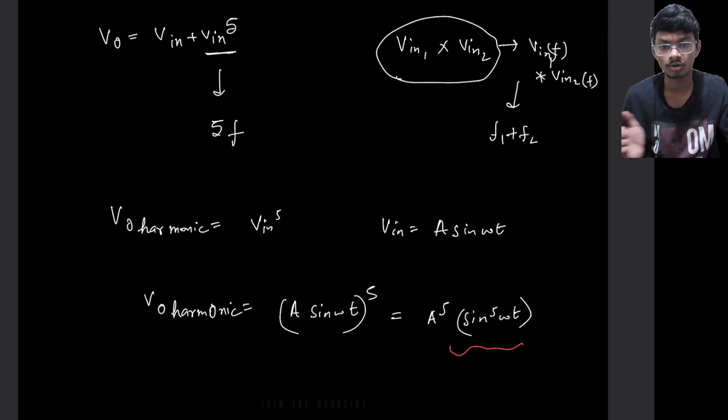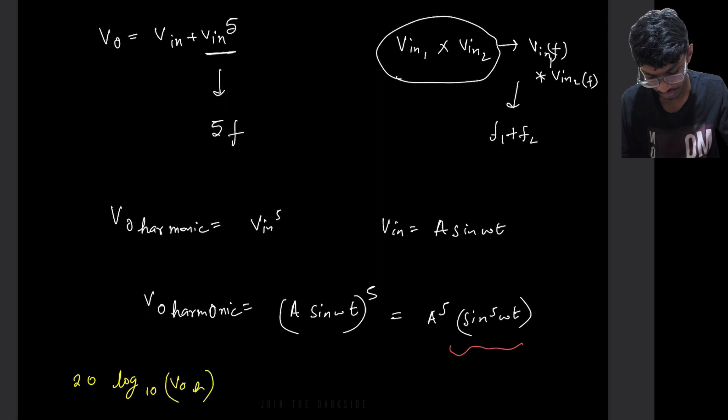So if we take log on both sides, we will get something like this: 20 log base 10 VO of H equals to 20 log base 10 A to the power 5 sine to the power 5 omega t.